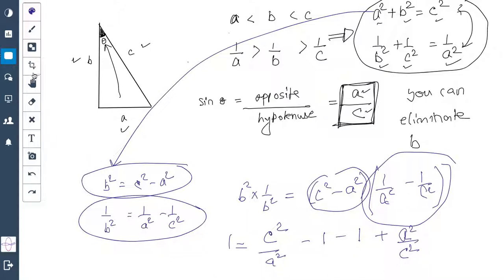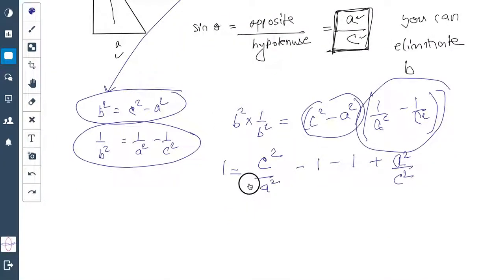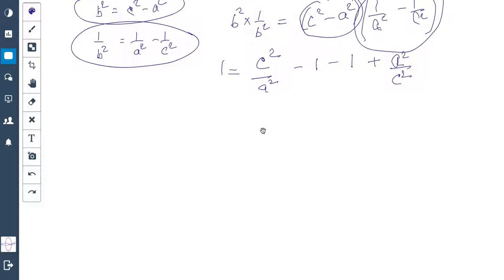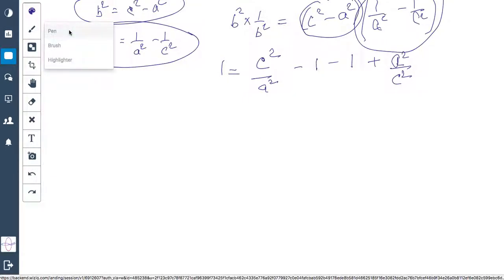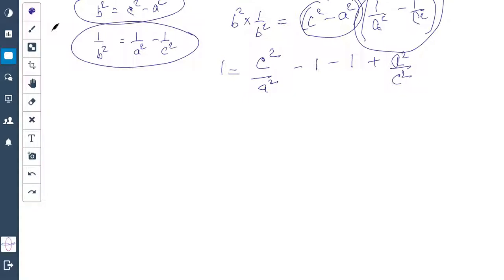You must have done this computation already, I just did it for the sake of completion. Now we know that we can bring these two negative ones to this side, so 3 = C²/A² + A²/C².